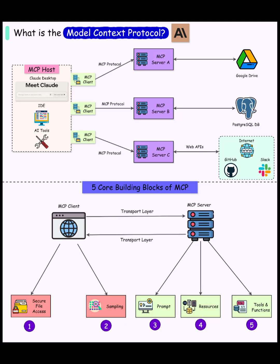Why MCP Matters? Before MCP, integrations multiplied out of control. 10 AI apps times 20 data sources meant 200 bespoke connectors to build and maintain. With MCP, each AI app implements MCP once, each data source implements MCP once, and everything interoperates. 10 plus 20 equals 30 total implementations instead of 200. Less glue code, faster delivery, easier governance, and a consistent developer experience.